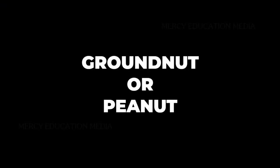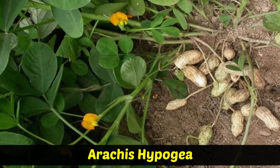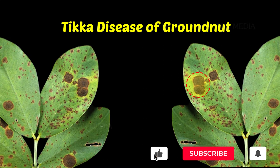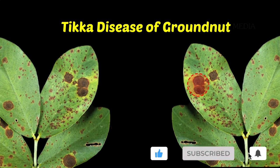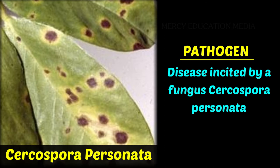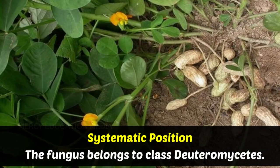Let us see about groundnut or peanut, i.e., Arachis hypogea. The tikka disease of groundnut — the pathogen is a fungus, Cercospora personata. The systematic position: this fungus belongs to the class Deuteromycetes.